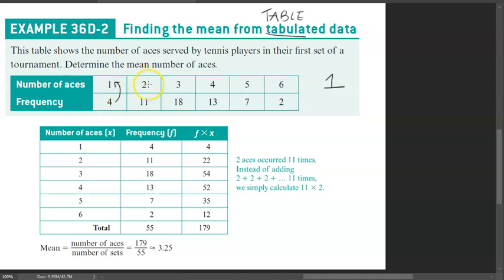For two aces within the tournament, 11 people scored that. For three aces, 18 people scored. So if we want to know how many people there were within this tournament, if we know four people scored this, 11 people scored that, 18 people. If this frequency indicates how many people there are, can't we just add these all up to get our total amount? We might as well.